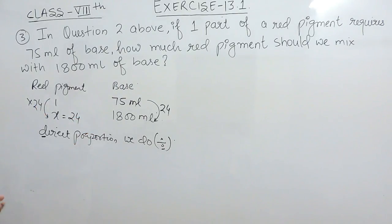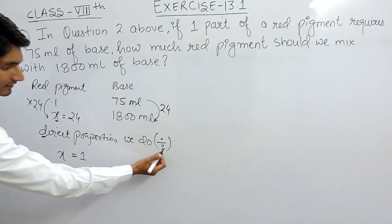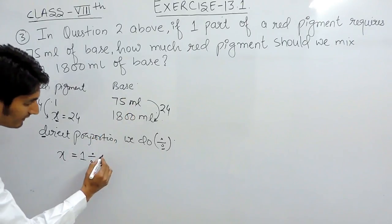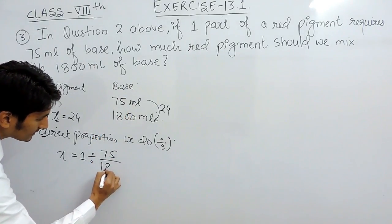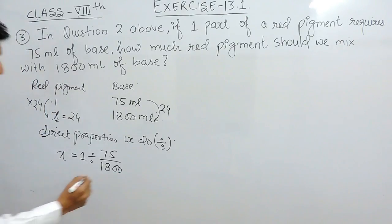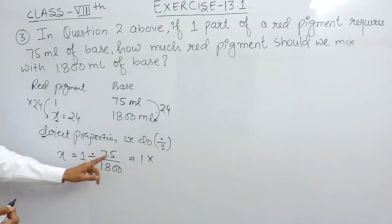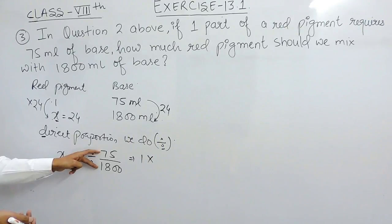If you want to solve this, basically you have to find the value of x, which is the part of red pigment. You can write x as this. Now you have to write equals to, and the value above this variable must be written here. Now we know that this is a direct proportion and we need to divide. And this complete value must be written as it is: 75 upon 1800.